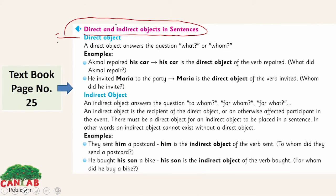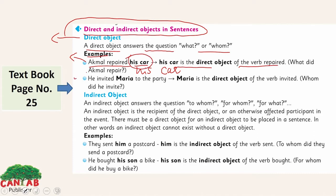Now look at direct and indirect objects in a sentence. A direct object answers the questions 'what' or 'whom.' For example: 'Akmal repaired his car' — 'his car' is the direct object of the verb 'repaired.' What did Akmal repair? His car. Akmal is the subject, and 'his car' is the direct object on which the action is done. Another example: 'He invited Maria to the party' — Maria is the direct object of the verb 'invited.' Whom did he invite? Maria. The direct object can be a thing, a person, or an animal — it depends on the context.